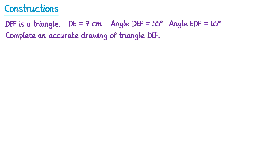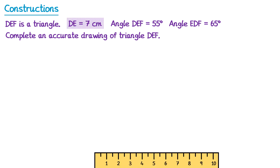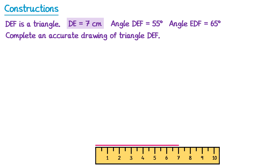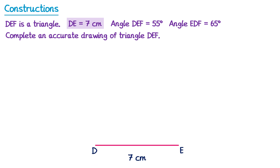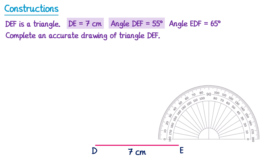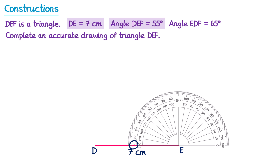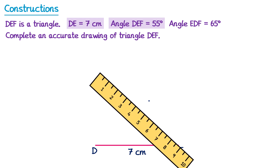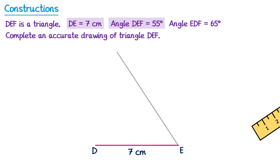So we'll draw a 7 centimetre line and label it as DE. Now we have angle DEF which is 55 degrees, which will be the angle at point E. So if we take the protractor, the zero here is on the outside scale, so we go around the outside scale to 55 degrees and mark on a point here. This means that if we take a ruler and draw a straight line from E through this point, then we've made a 55 degree angle here, which means that point F must be somewhere on this grey line — we just don't know where yet.